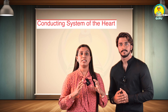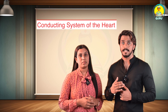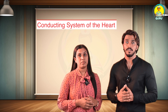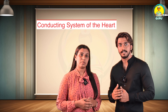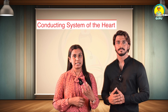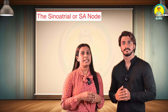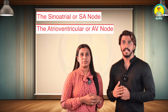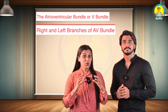The conducting system of the heart consists of specialized cardiac muscle cells that can initiate impulses and conduct them rapidly through the heart. They coordinate the contraction of the four chambers so that both atria contract together and both ventricles contract together, with atrial contraction occurring first. This synchronized contraction is essential for efficient pumping and for the maintenance of systemic and pulmonary circulations. The parts include the sinoatrial (SA) node, the atrioventricular (AV) node, the atrioventricular bundle, and the right and left branches of the AV bundle.